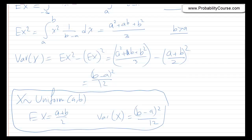So to summarize, if X is uniformly distributed from a to b, its expected value is a plus b over 2 and its variance is b minus a squared over 12. Sometimes in practice we encounter random variables that are uniformly distributed. Also, the uniform distribution is useful when simulating other random variables. If we have access to a program that generates X uniformly distributed from 0 to 1, we can use this random number to generate other continuous random variables, such as normal or exponential random variables, as we will see later on.